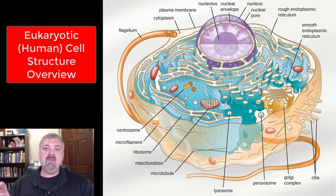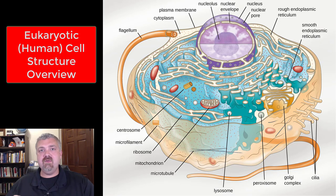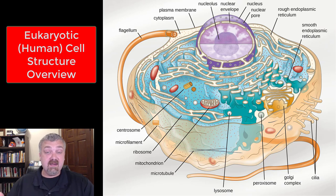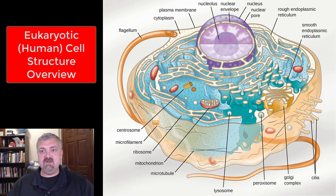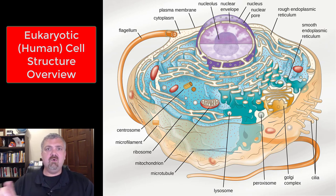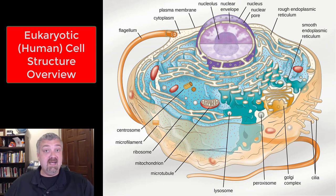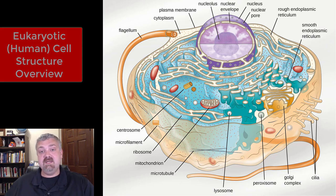Hey everybody, Dr. O here. In this video, I'm going to give you a quick overview of all the organelles of a typical eukaryotic cell like our human cells. Some of these will need more detail and I'll do separate videos, but this will be a high level overview. I'm just going to go right around the cell here like I did with the bacterial cell.